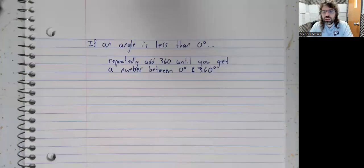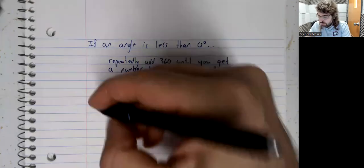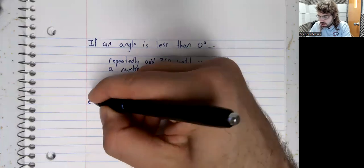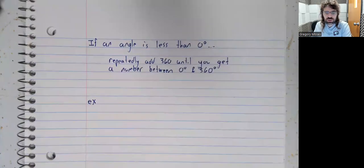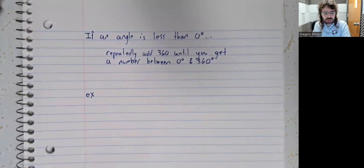If you've got a negative angle and you want a co-terminal angle between 0 and 360, it's a similar process, but you're adding instead of subtracting. We already did one kind of lengthy example. Let's keep this one briefer.